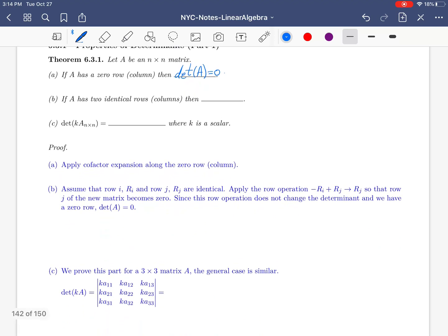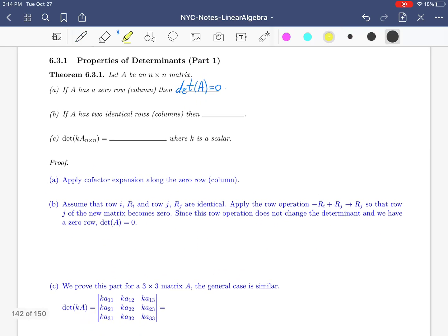Before covering part B, let's see what is the proof for this. Well, the proof is very simple. Assume you have a row with all the entries 0. Then if you apply the cofactor expansion along that row, since all these entries are 0, then the whole cofactor expansion becomes 0. So that's why the determinant is 0.